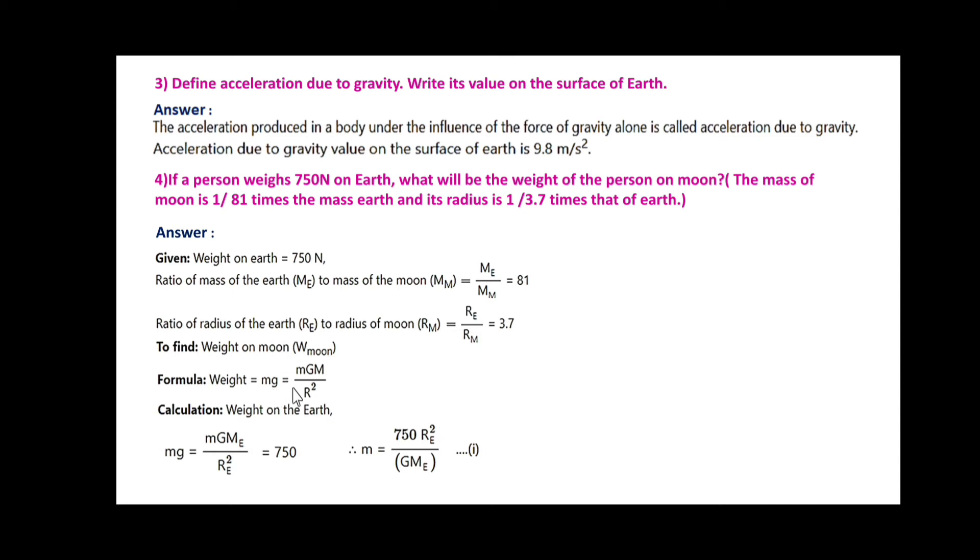Formula: weight equals mg. Weight of earth mg = m·GME/RE² = 750. Therefore, m = 750·RE²/GME. This is equation 1.